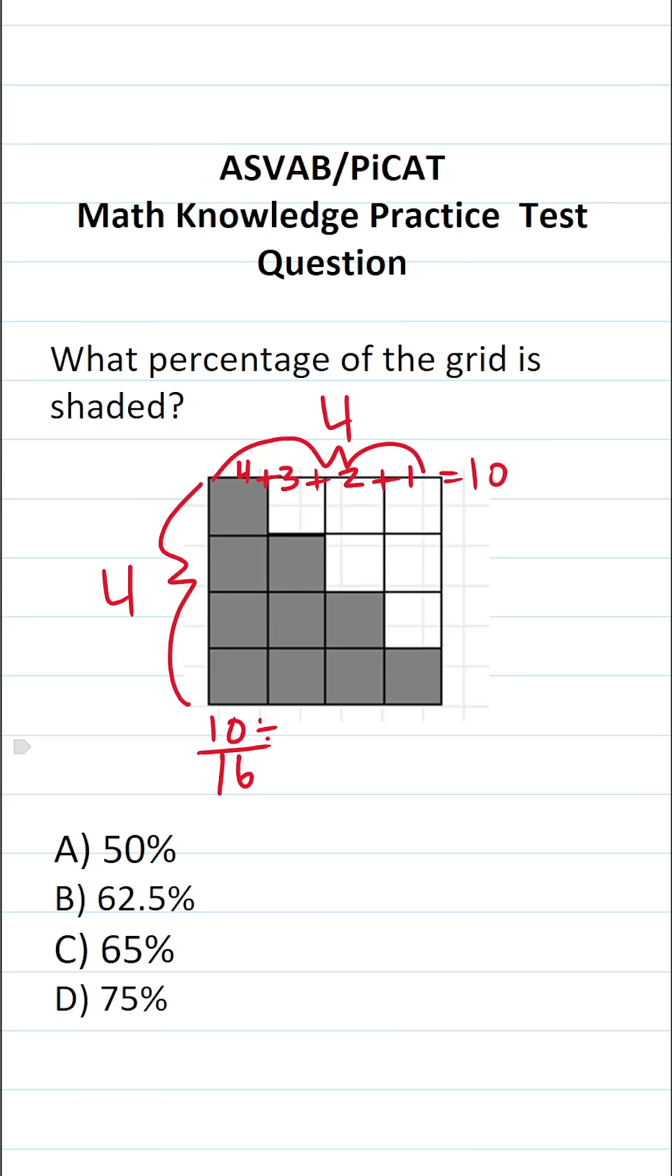Let's make this math a little bit easier by reducing both 10 and 16 by a common factor of 2. 10 divided by 2 is 5. 16 divided by 2 is 8. So 5 eighths of this grid is shaded.